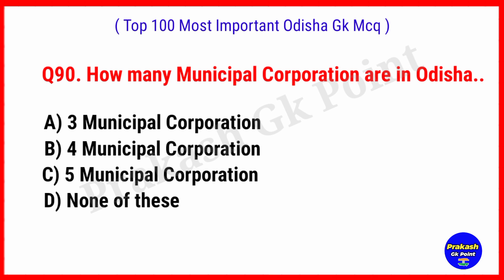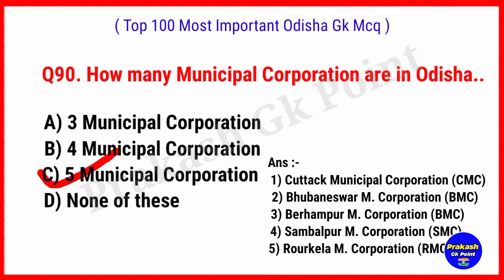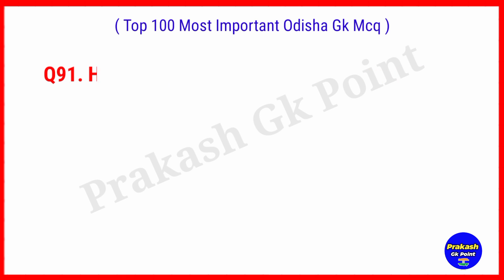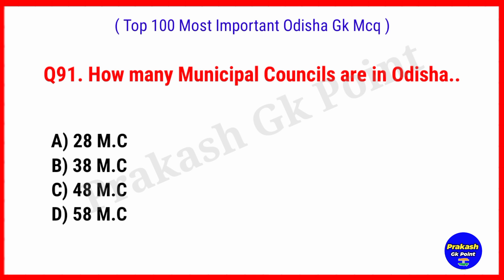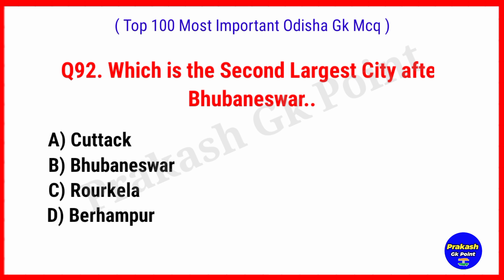How many Municipal Corporations are in Odisha at present? Answer: Option C, 5 Municipal Corporations — CMC, BMC, BMC, SMC and RMC. How many Municipal Councils are in Odisha at present? Answer: Option C, 48 Municipal Councils.